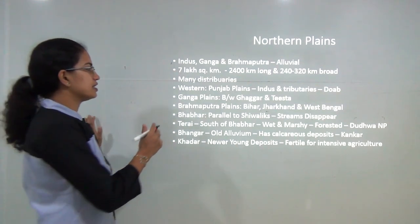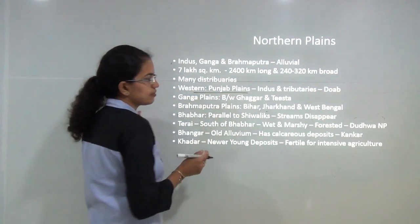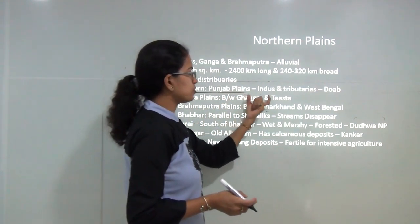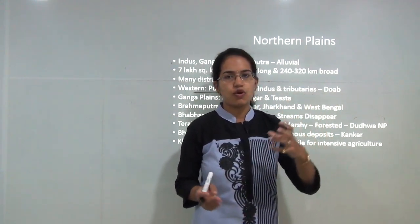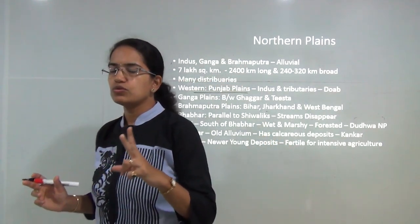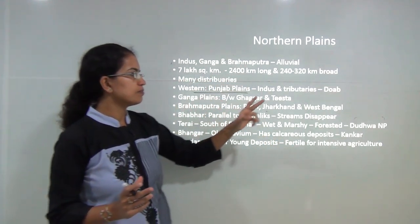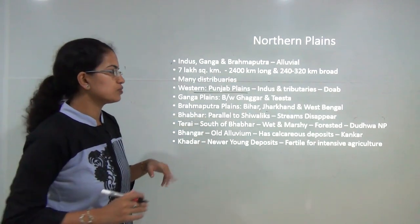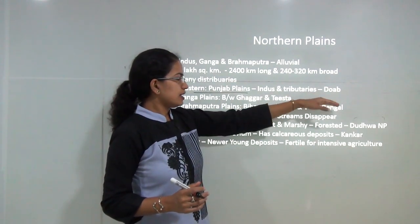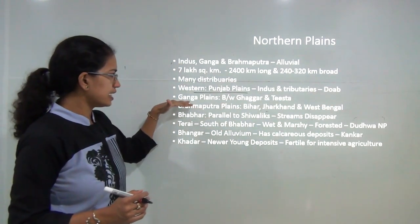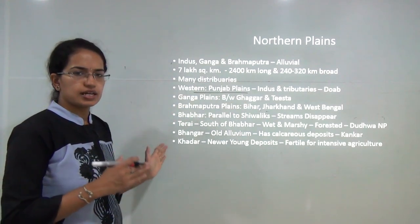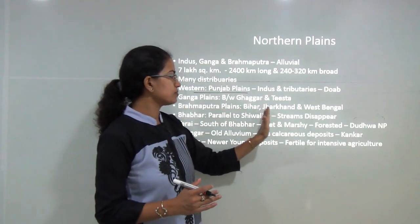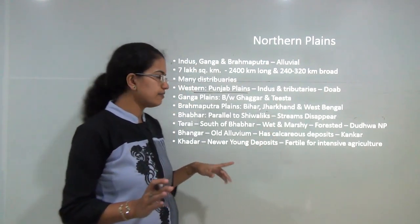The western part of the northern plains is known as the Punjab plains, formed below the Punjab Himalayas, composed of the Indus and its distributaries which form the Doab. Doab means 'do' and 'aab' — plains fed by two rivers. Similarly, you have the Ganga plains formed between the Ghaggar and Tista rivers, and the Brahmaputra plains covering most of Bihar, Jharkhand, and West Bengal.